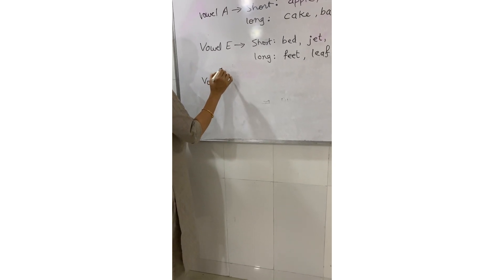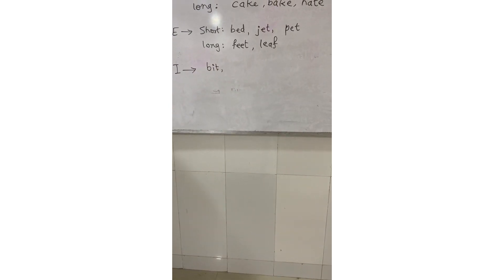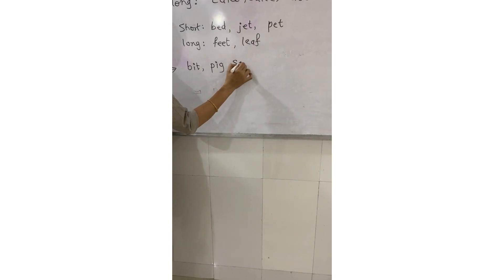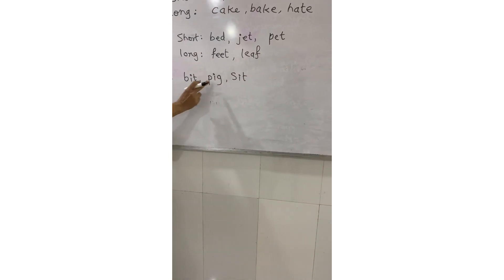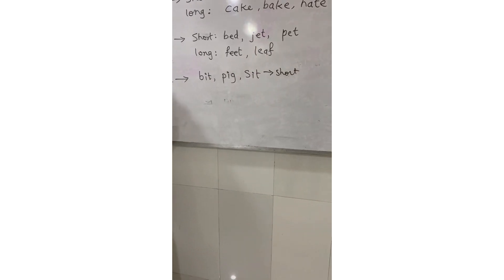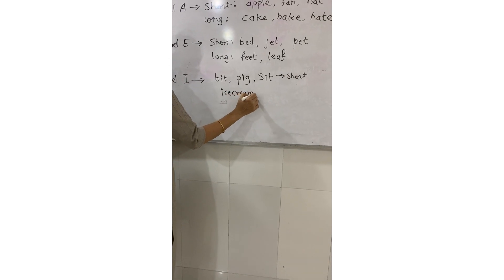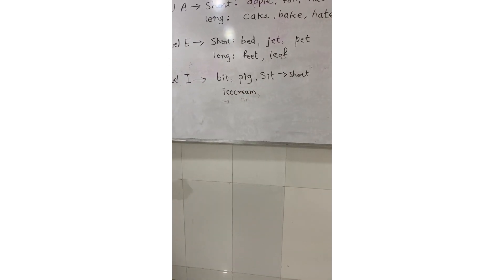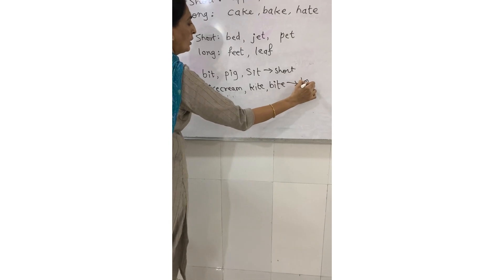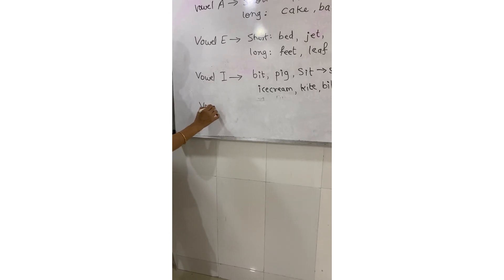Now the long and short sound of vowel I. Short sound examples: B-I-T 'bit', P-I-G 'pig', 'sit' — these are the short sounds of vowel I. Long sound examples: 'ice', 'kite', 'bite' — these are the long sounds of vowel I.